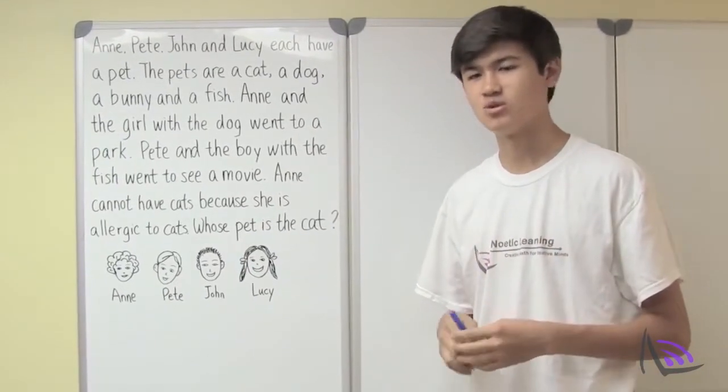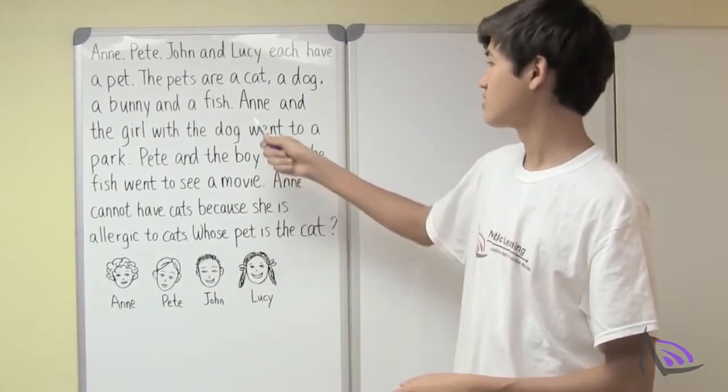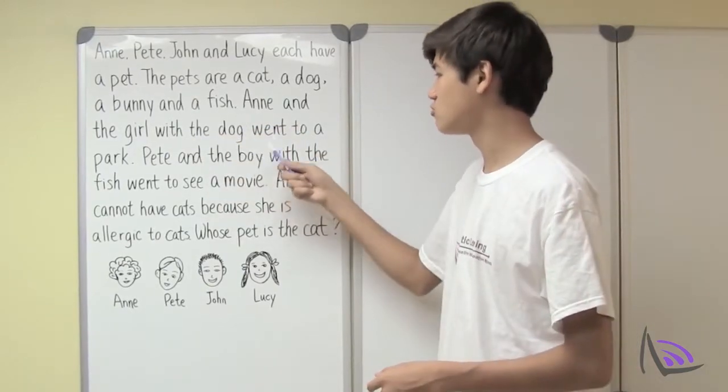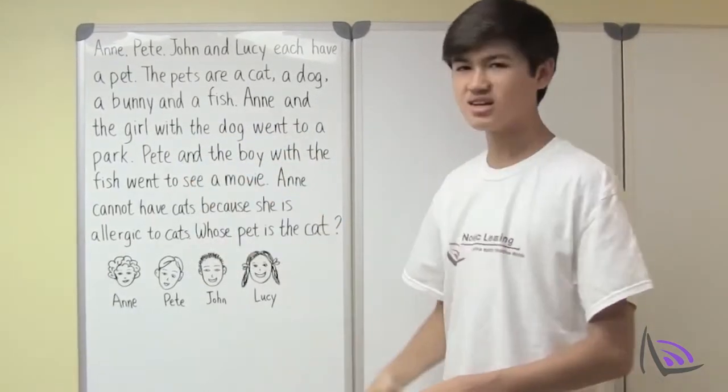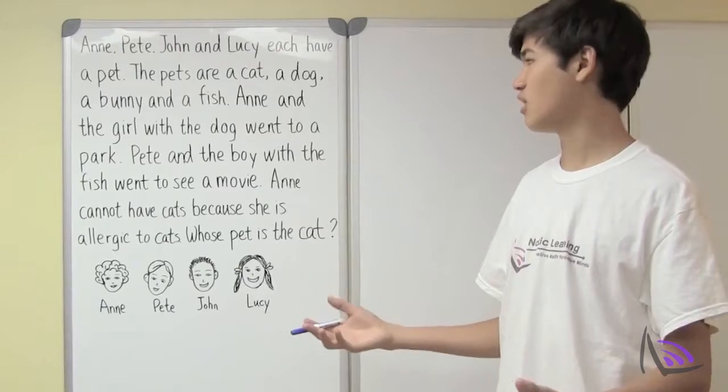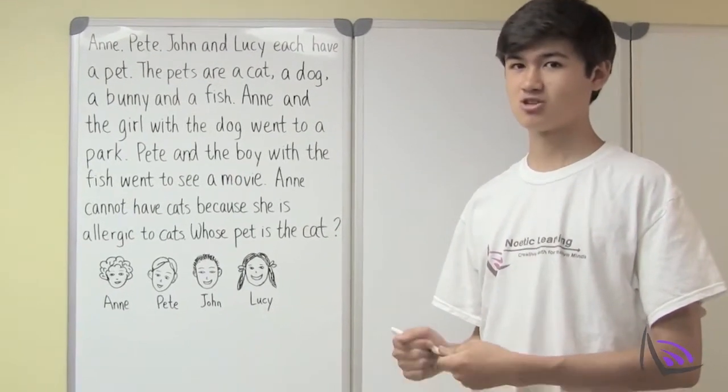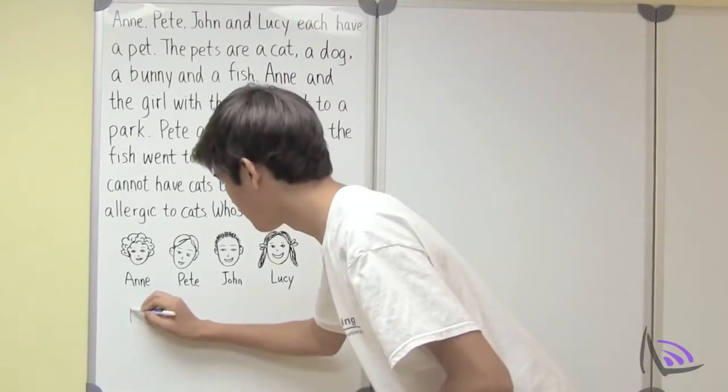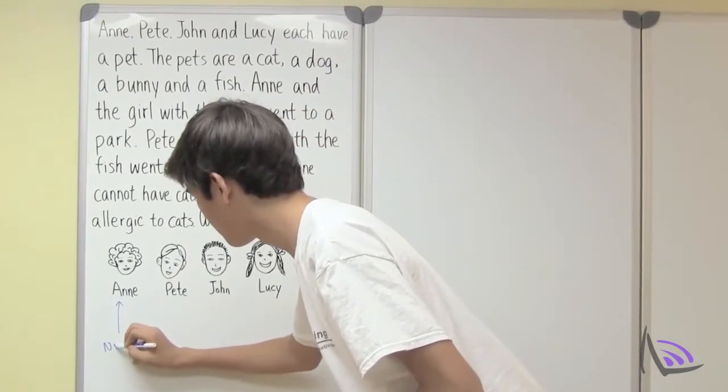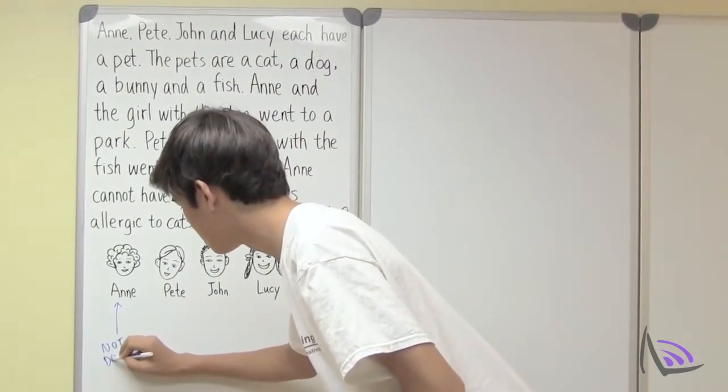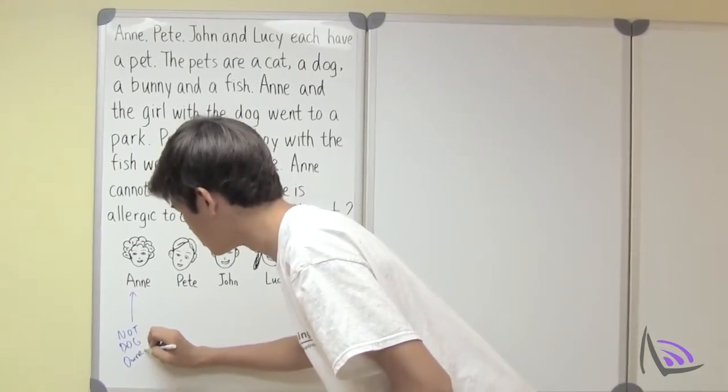Let's analyze what is given once more. So Ann and the girl with the dog went to a park. This line doesn't tell us who owns the dog but it does tell us that Ann must not be the owner of the dog. So let's make a note of that.